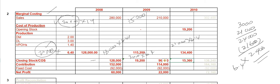The production cost is 21,000 times $6.40, giving $134,400. The closing stock will be 2,400 units times $6.40, which is $15,360. Your cost of goods sold is $138,240. Contribution — sales minus cost of goods sold — is $164,160. Deducting fixed cost of $92,000, your net profit under marginal costing for 2010 is $72,160.